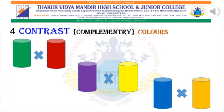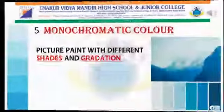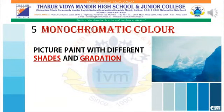Next is complementary color scheme — you can also call it contrast color. Red color's contrast is green, yellow color's contrast is violet, and blue color's contrast is orange. Pairs of contrasting colors are known as complementary color scheme. Next is monochromatic color scheme: the color scheme of a picture painted in different tints and shades of only one color is known as monochromatic color scheme.